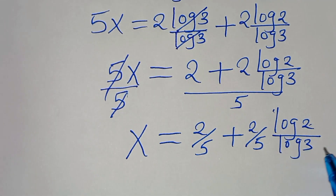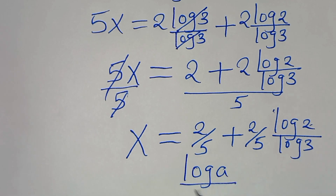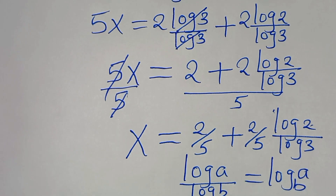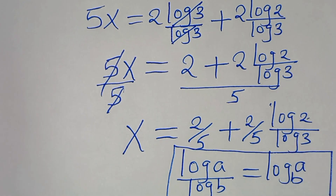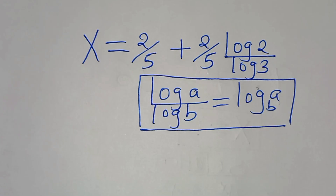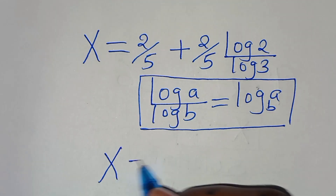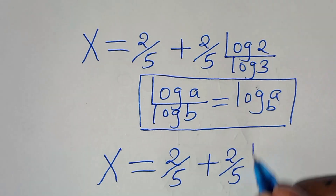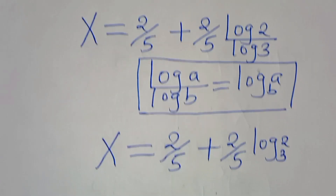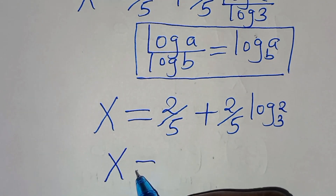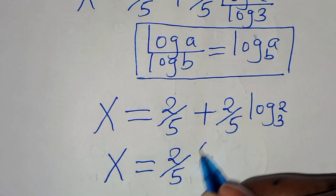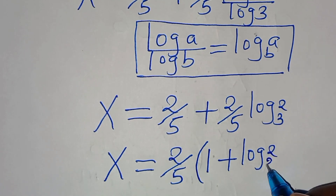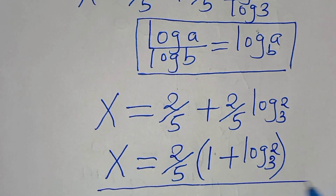Now log 2 divided by log 3 is in the form log a divided by log b, which by the change of base formula equals log base b of a. Applying this, x equals 2/5 plus (2/5)·log₃2. Factoring out 2/5, we get x equals (2/5)(1 + log₃2). This is the value of x.